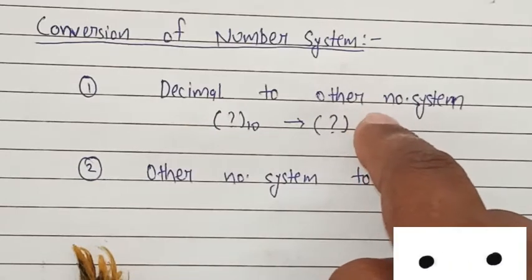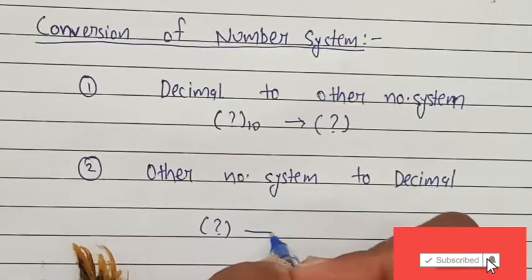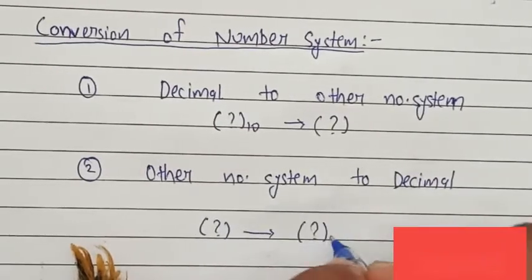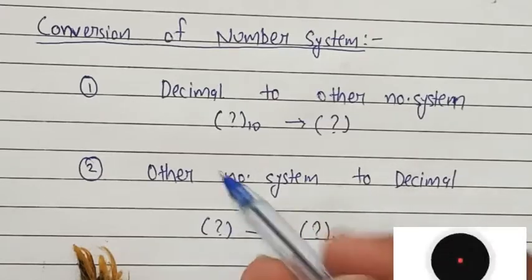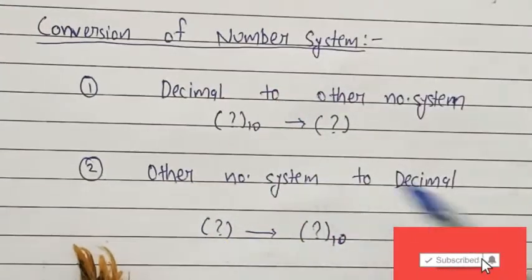So binary, octal, and hexadecimal. And similarly, you have to convert other number systems to your decimal number system. So in this case, similarly there are again binary, octal, and hexadecimal to decimal.